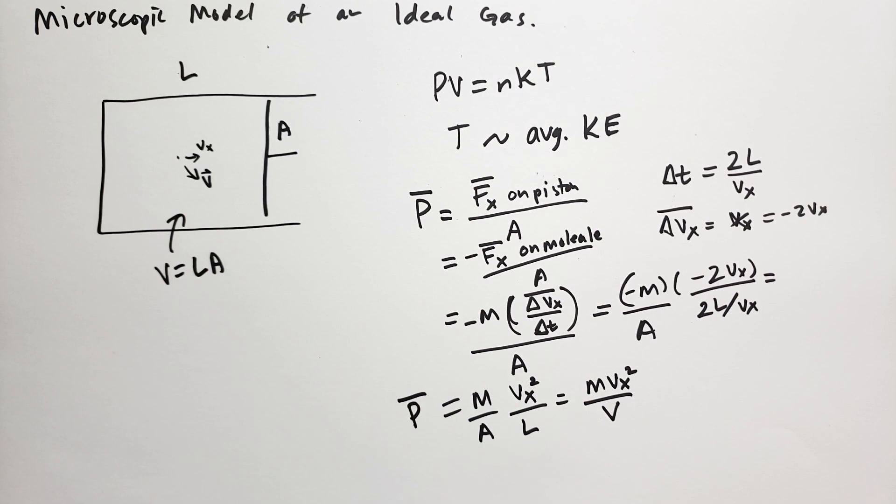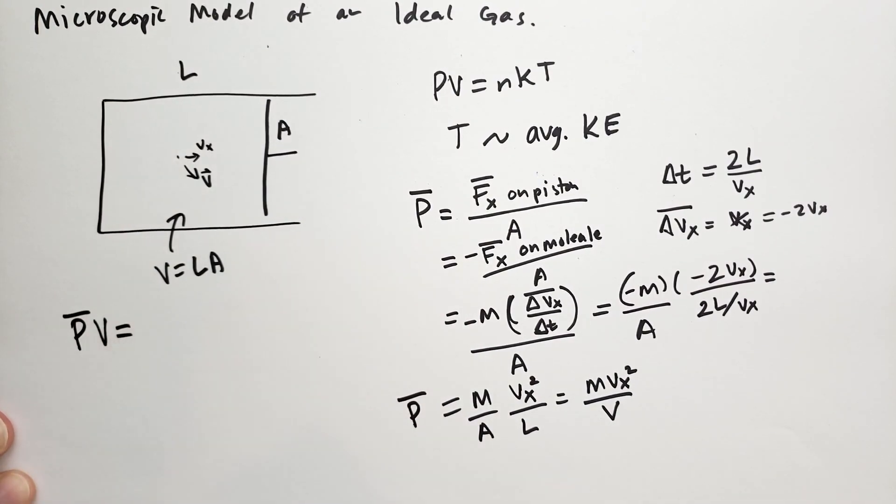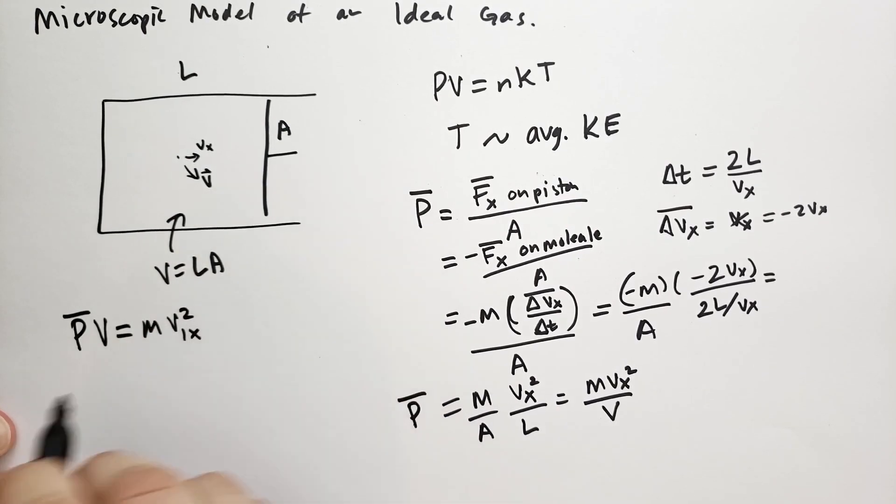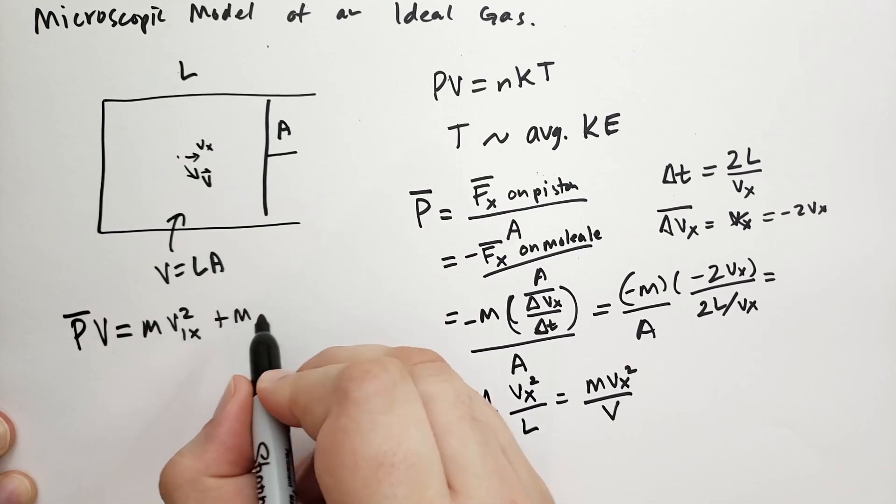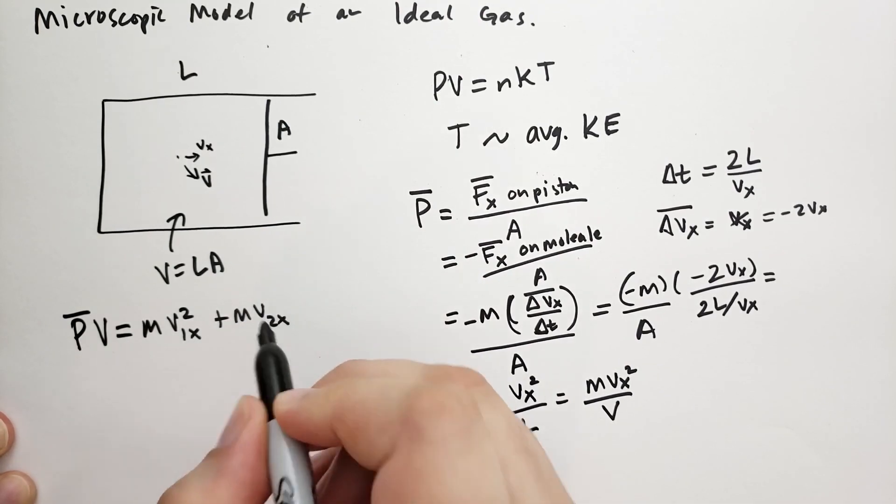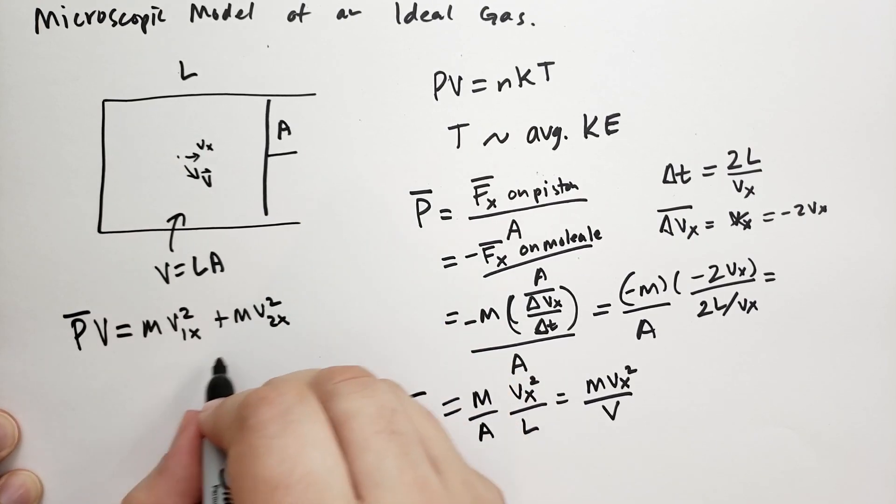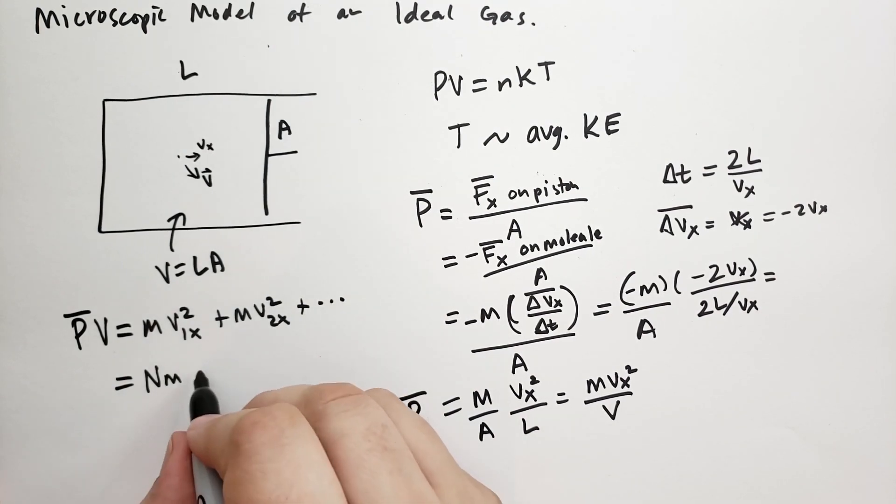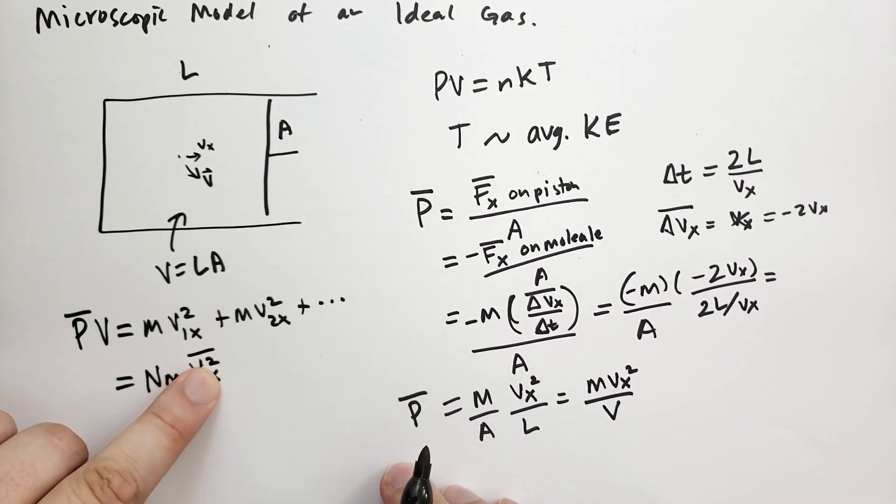Suppose we had many particles. They don't collide with each other. They just pass right through each other like ghosts. Then we can say the average pressure times the volume is going to be the mass of the first particle times the average velocity in the X direction for the first particle, plus the mass of the next particle, they're all going to have the same mass. So V2 squared for the second particle, and so on. So we can say that the average here is the number of particles times their mass times the average of the velocity in the X direction squared, the average of the square.